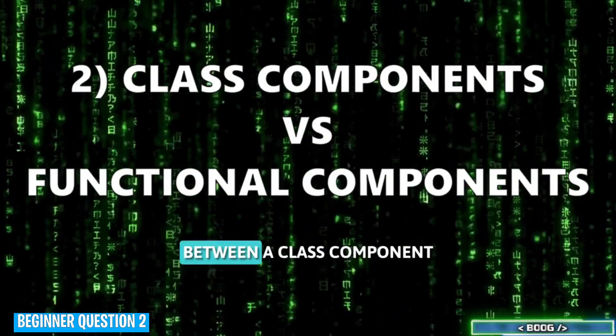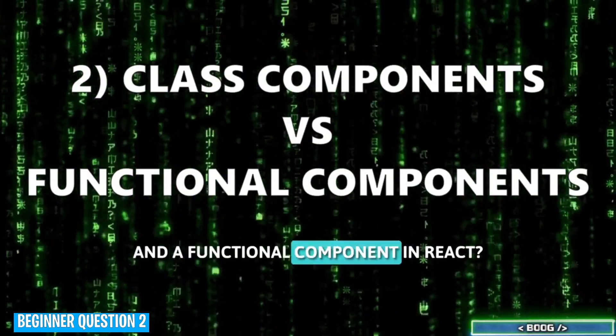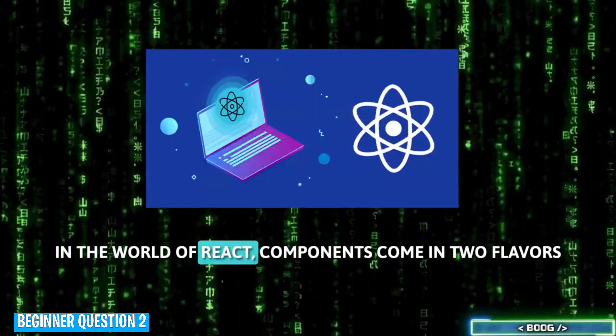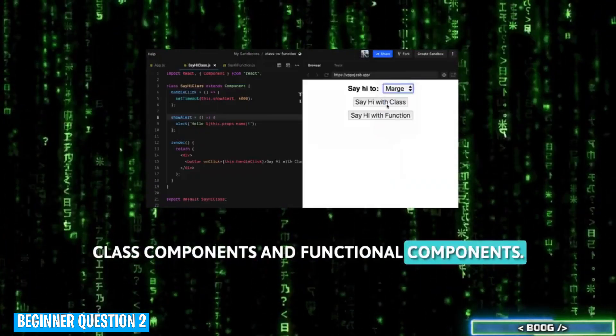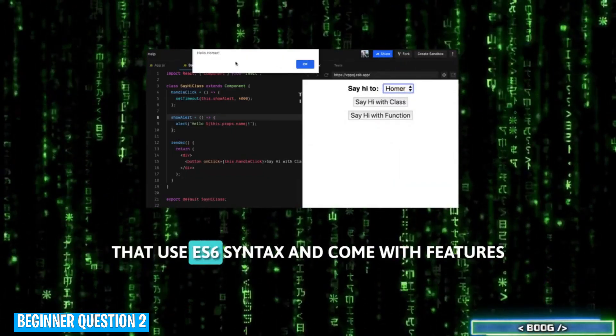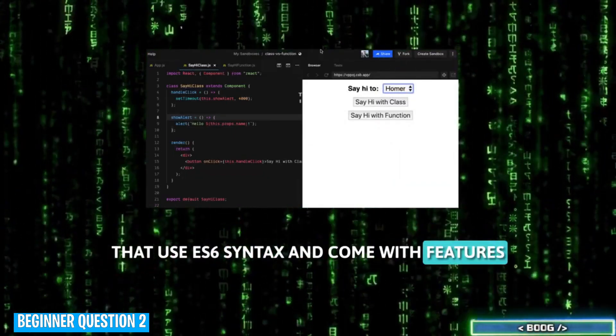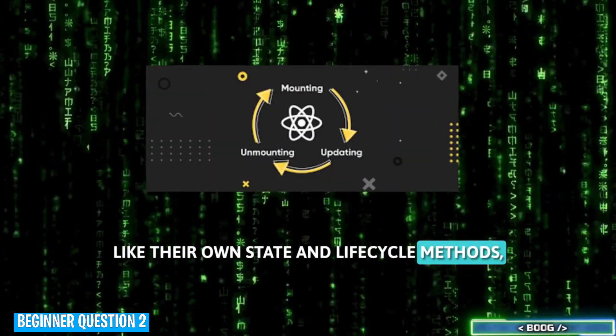Question 2. What is the difference between a class component and a functional component in React? In the world of React, components come in two flavors, class components and functional components. Class components are like old-school recipes that use ES6 syntax and come with features like their own state and lifecycle methods,